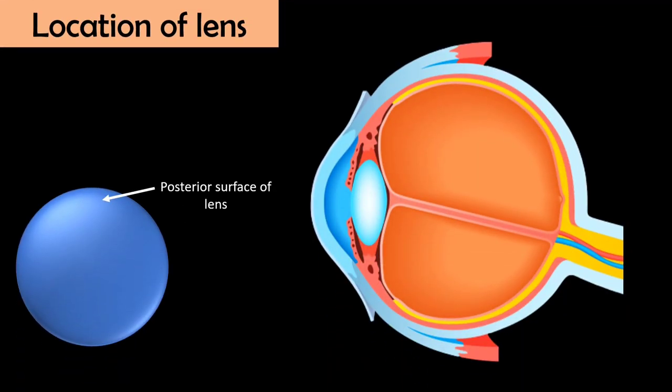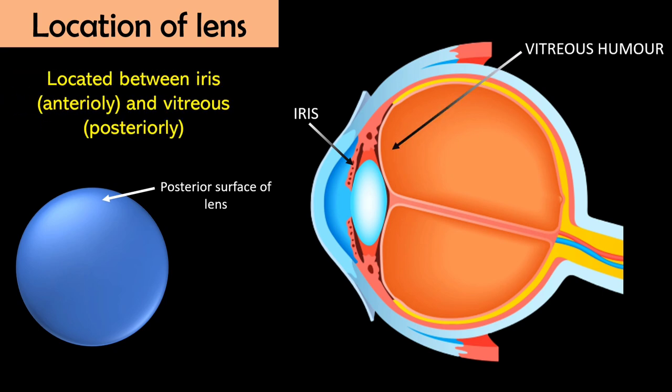Now we will see location of lens. The basic location of lens is behind the iris and in front of the vitreous, or you can say lens is in contact with aqueous humor anteriorly and vitreous humor posteriorly. Posteriorly, the transparent vitreous gel has a shallow depression in which lens is placed. That depression in vitreous gel is known as patellar fossa.